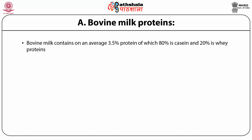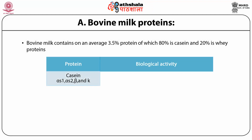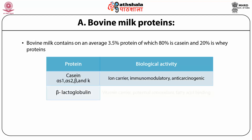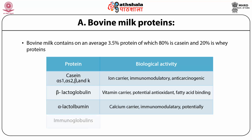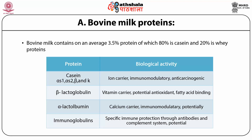Different casein fractions — alpha-S1, alpha-S2, beta and kappa — have iron carrier activity and also immunomodulatory and anticariogenic activity. In the whey protein category, beta-lactoglobulin has vitamin carrier activity and is also a potent antioxidant and fatty acid binder. Alpha-lactalbumin has calcium carrier activity and also immunomodulatory and anticariogenic activity. The third major whey protein is immunoglobulin, with specific immune protection activity through antibodies and the complement system.